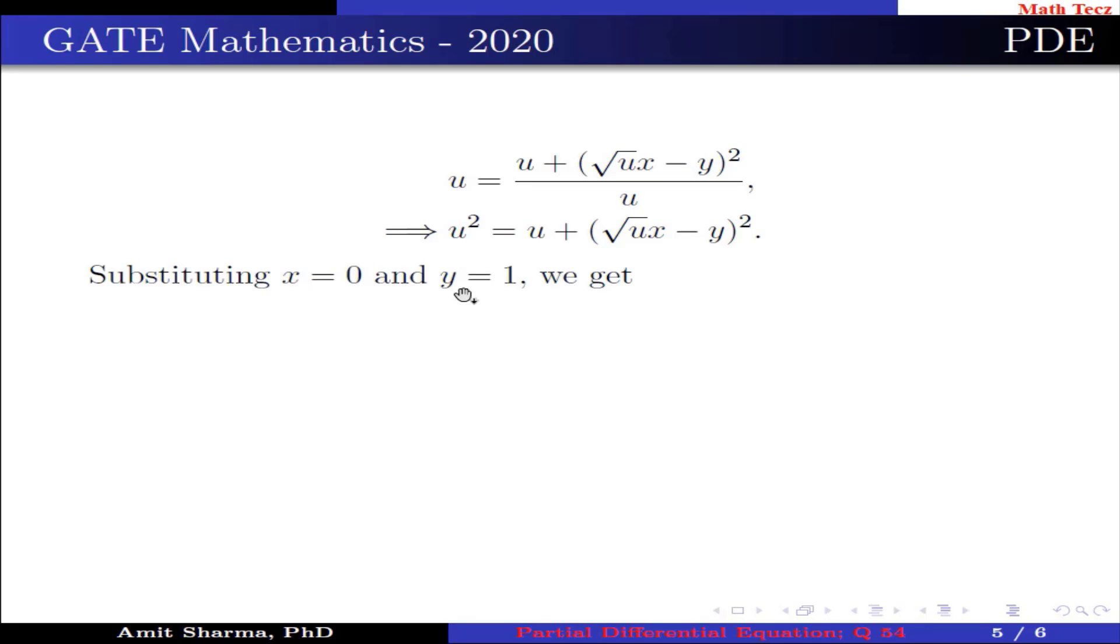Substituting x = 0 and y = 1 we get u² = u + 1, which is further written as u² - u - 1 = 0.